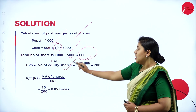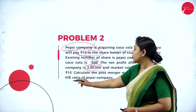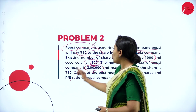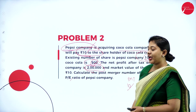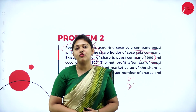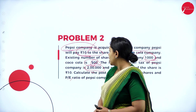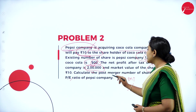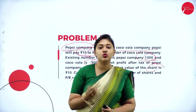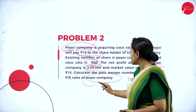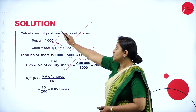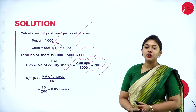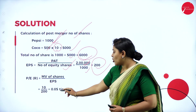Now let us calculate EPS. We need to calculate EPS because the question requires the P/E ratio. Market value per share is known — it is 10 rupees — but EPS is not given. To calculate EPS, the formula is profit after tax divided by total number of shares. Profit after tax is 2 lakh. We are calculating Pepsi company's P/E ratio, so we consider only Pepsi's 1,000 shares. Thus EPS is 2,00,000 divided by 1,000 equals 200. Substituting into the P/E formula, the answer is 0.05 times.